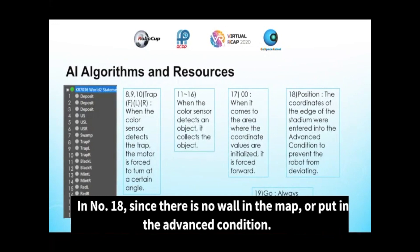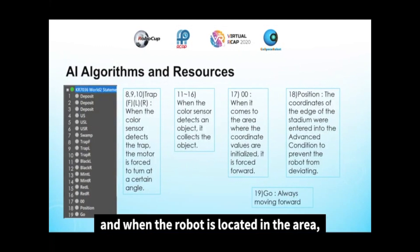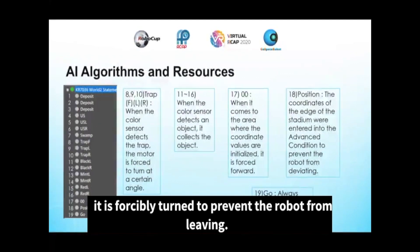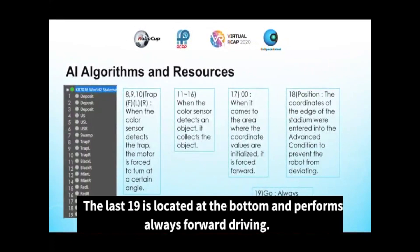In command 18, since there is no wall in the map, the coordinates of the map are put in the advanced condition, and when the robot is located in that area, it is forcibly turned to prevent the robot from leaving. The last command, 19, is located at the bottom and performs always-forward driving.